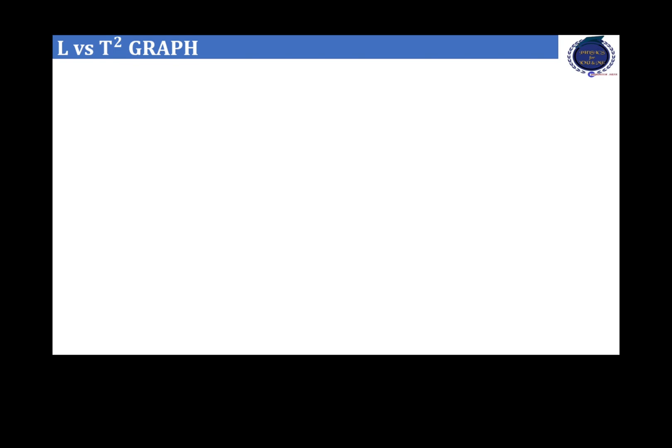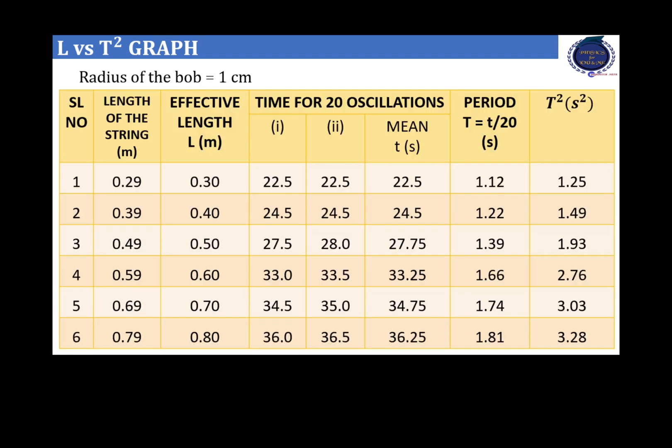The first example is the determination of effective lengths of a simple pendulum. It is from the first year. We have considered the readings given in the table are actually obtained by a student in a laboratory. Therefore, there may be errors in the measurement. These are not calculated values. Now, to plot a graph,